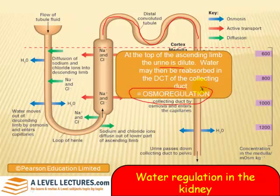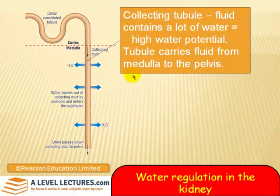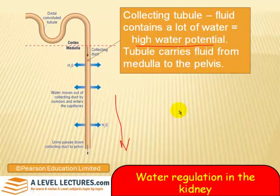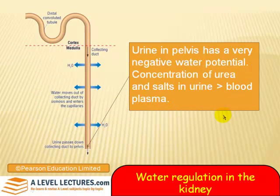This process is called osmoregulation. In the DCT and collecting duct, active transport — requiring energy — is used to adjust various salt concentrations. In the collecting duct there's still a lot of water, and the idea is to start reabsorbing some of that. The fluid contains a lot of water, i.e. a high water potential approaching zero. The tubule carries fluid from the medulla down into the pelvis. The tissue fluid in the medulla has a very low water potential, so water is drawn out of the collecting duct by osmosis into the surrounding blood capillaries. The urine in the pelvis has a very negative water potential — not a lot of water — so the concentration of urea and salts in the urine is much higher than in the blood plasma.